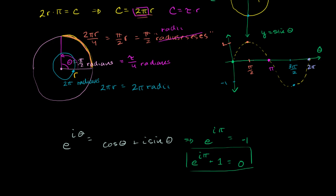One revolution is 1 tau radian. If you go only 1/4 of the way around, it's tau over 4 radians. Tau is more intuitive because you don't have to do weird conversions — multiplying or dividing by 2. However many radians in terms of tau, that's really how many revolutions you've gone around the circle. 10 tau radians means exactly 10 revolutions.